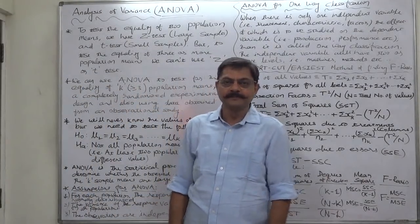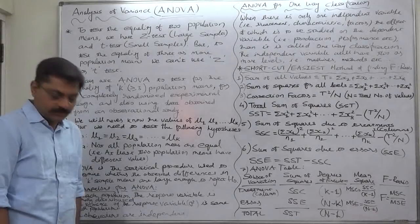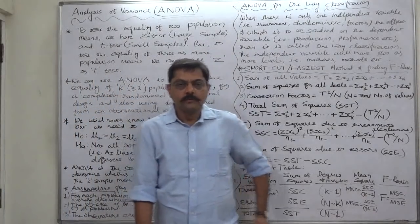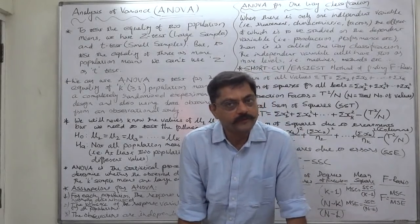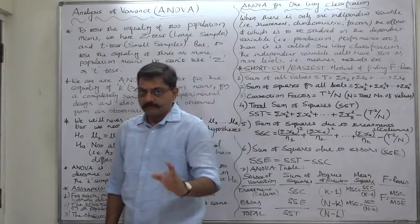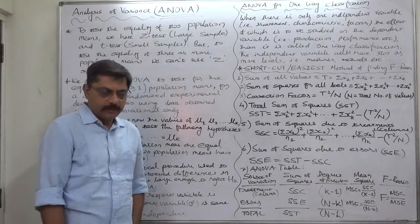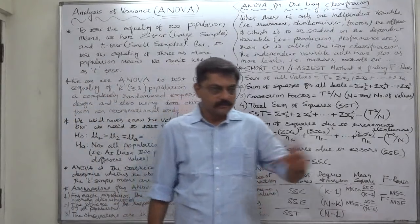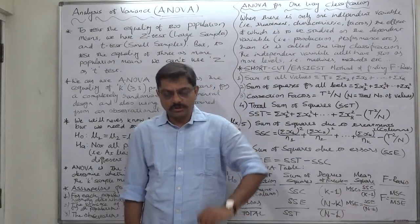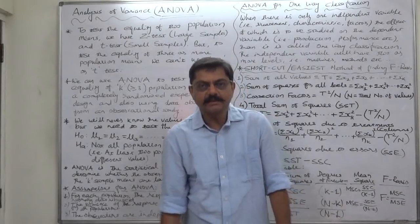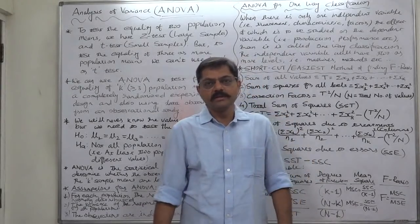Hello, namaskar and welcome. Analysis of variance, popularly known as ANOVA. What is ANOVA? We have already studied the tests of significance of difference between two means, for which we use Z test in case of large samples and T test in case of small samples. Or if we consider the Western approach: when the population standard deviation or variance is known and the sample is large, we use Z test.